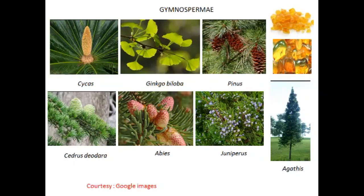In the Jurassic period, members of pteridosperms, Cordaitales, Bennettitales, Pentoxylales, Cycadales, Ginkgoales, Coniferales and Gnetales constituted the dominant flora. Of these, the first four orders are totally extinct. The Bennettitales showed close resemblance with today's Cycadales. The Cordaitales and Gnetales are believed to represent the ancestral stock of modern Coniferales and Gnetales. The living gymnosperms are generally grouped under four orders: Cycadales, Ginkgoales, Coniferales and Gnetales, of which Cycadales and Ginkgoales have a long fossil history and are sometimes referred to as living fossils.